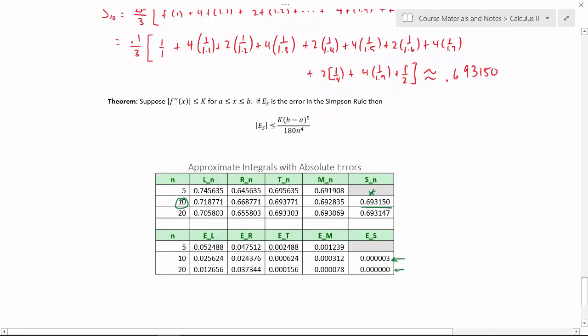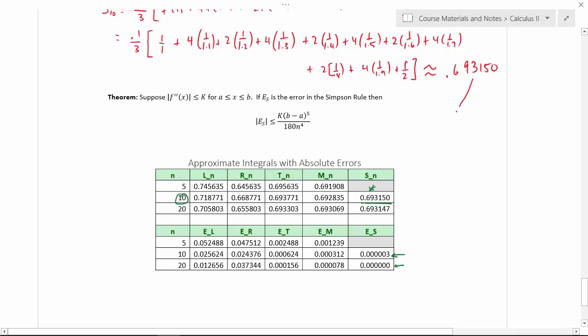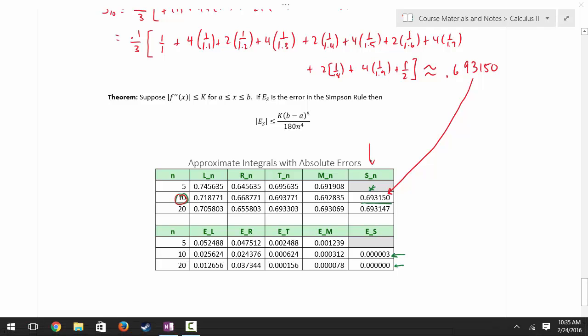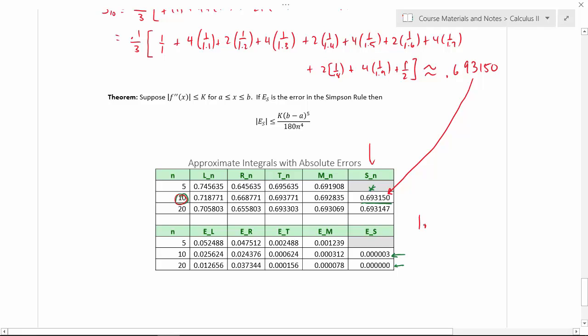And in the previous video and in class, I showed you that this is the value in the table that we were looking at. That is, for n equals 10, it's Simpson's rule, and the return value is 0.693150. Remember that the actual value is log of 2, which was 0.693147, at least to six decimal places.